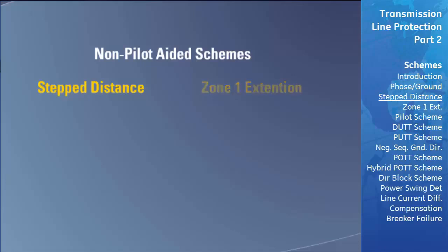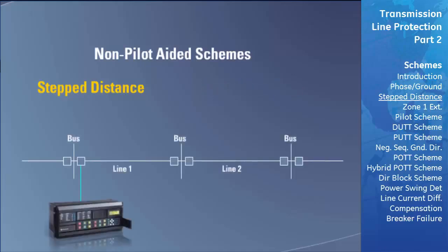We will first describe the stepped distance scheme, which is the basic structure for all other distance schemes. The stepped distance scheme uses four different zones of protection to protect its own transmission line and to act as a backup distance relay for adjacent lines. We will use the power system shown here to describe how the four zones are set and used. The main transmission line we will be protecting is transmission line number one, with the relay located at the far left of that line.